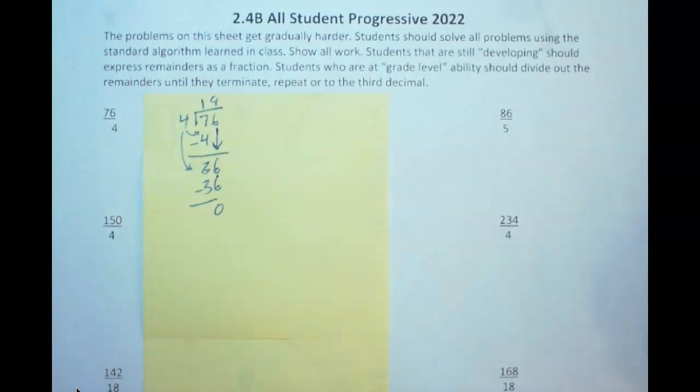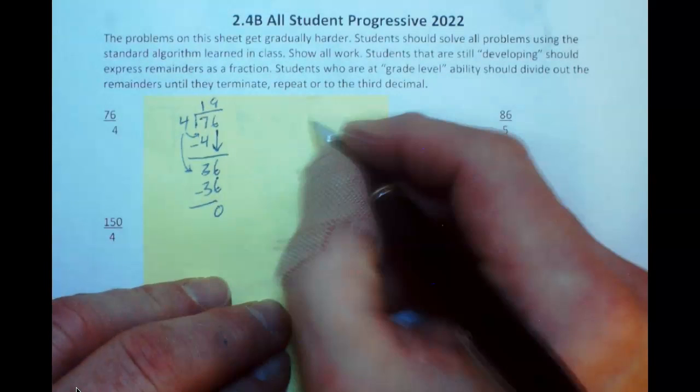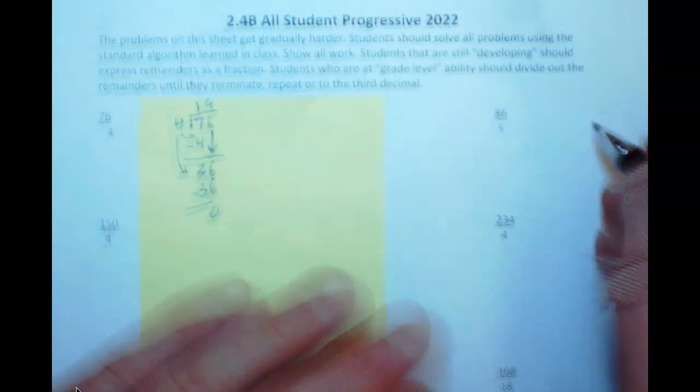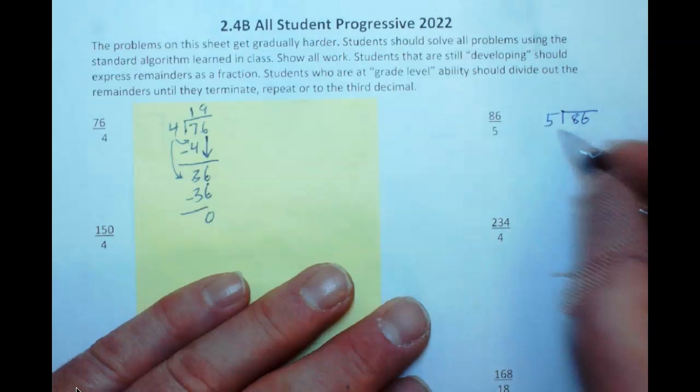So, that will work just fine. If you are a student who is struggling a little bit with division, this next problem, 86 divided by 5. We can do it over here, 86 divided by 5. 5 goes into 8, it goes in there one time. Subtract out 5, we have a remainder of 3.